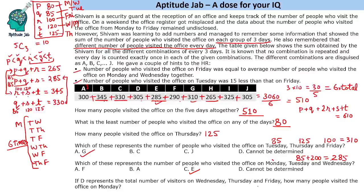The next question says if d represents Wednesday + Thursday + Friday, how many people visited on Monday? d = 305, and Thursday + Friday = 125 + 100 = 225, so Wednesday = 80. That means Monday = 120. That's the complete solution to this set. I hope you enjoyed solving this problem — don't forget to like this video.